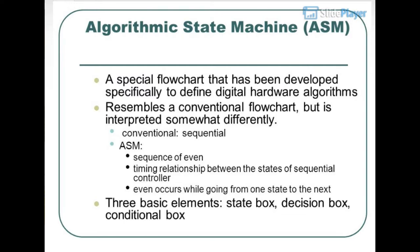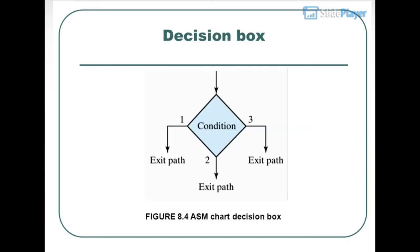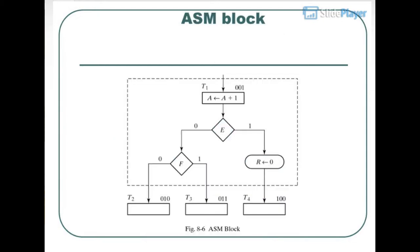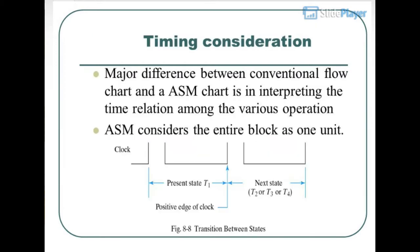There are three basic elements of an ASM chart: the State Box, Decision Box, and Conditional Box. The State Box (Figure 8.3) represents a stable state. The Decision Box (Figure 8.4) represents a conditional branch. The Conditional Box (Figure 8.5) represents outputs conditional on decisions. An ASM Block groups these elements as one unit. A major difference between a conventional flowchart and an ASM chart is in interpreting the time relations among the various operations — the ASM considers the entire block as one unit.